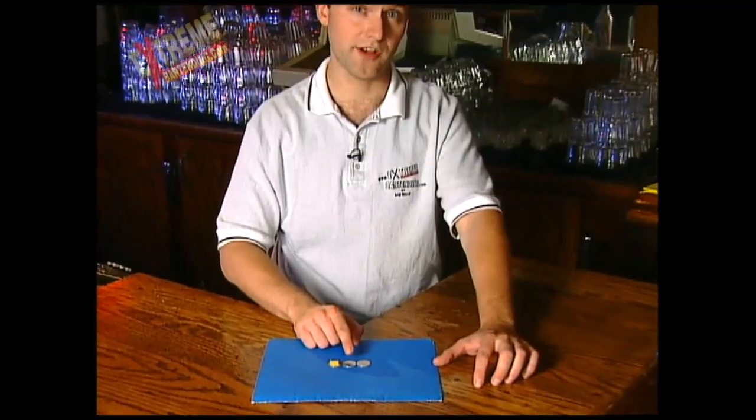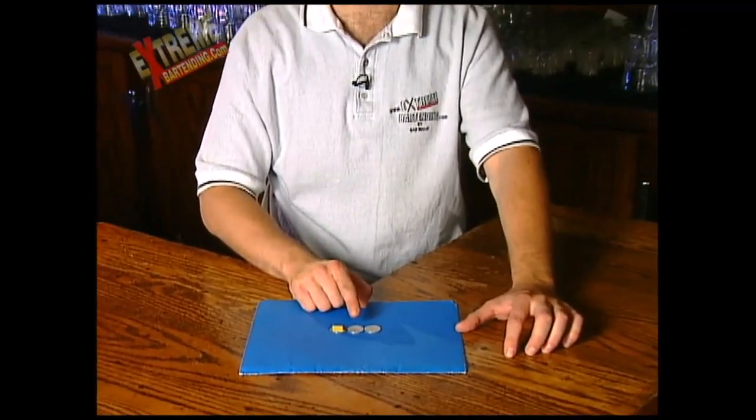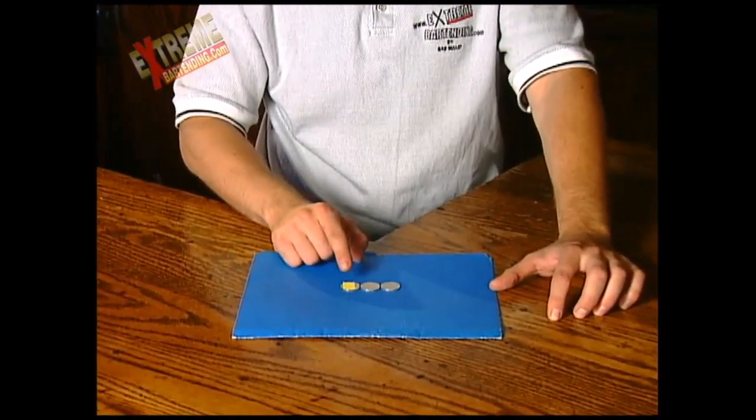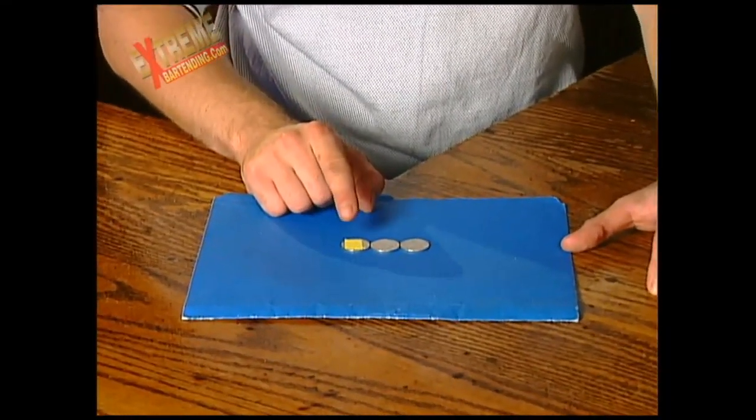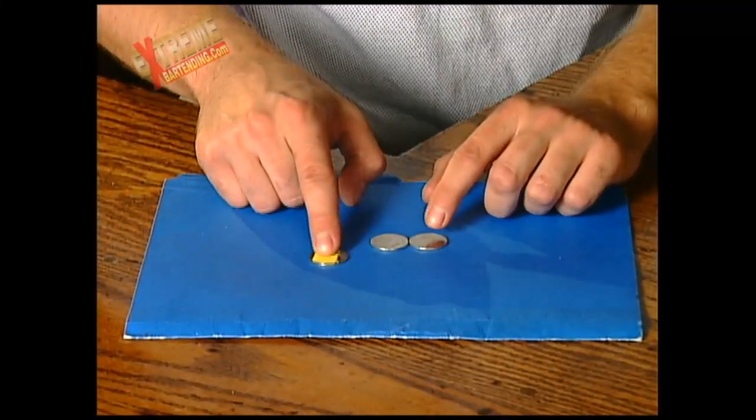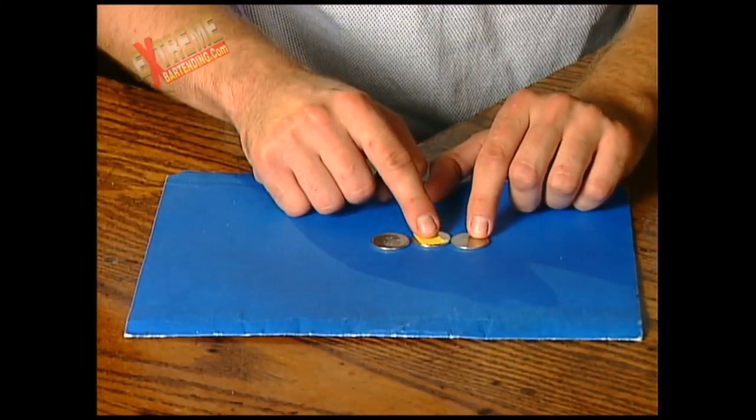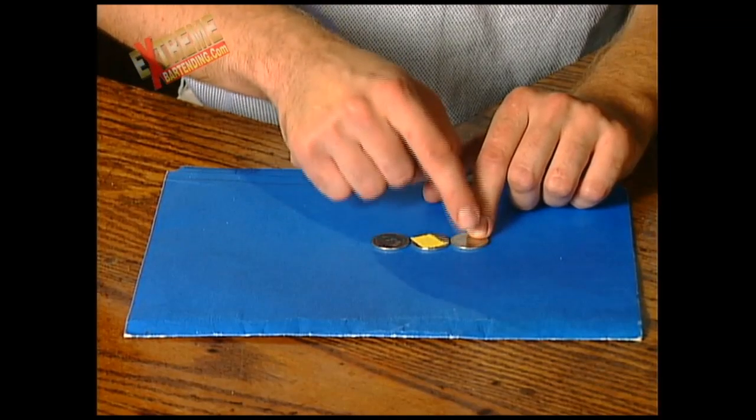Now this quarter, you can move but you can't touch. The center one, you can touch but you can't move. And the far one, which I have marked here, you can move and touch. Now the point of this game is to get this quarter here, but it cannot touch this quarter.